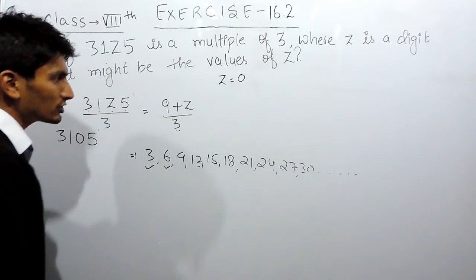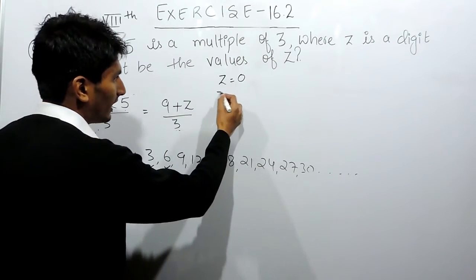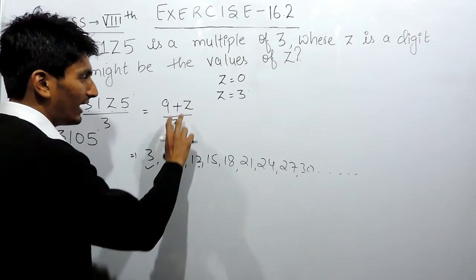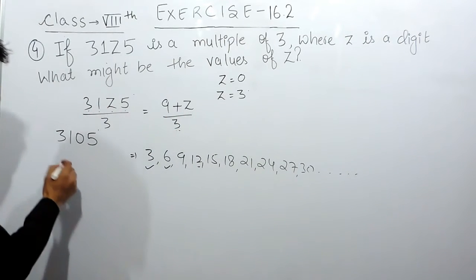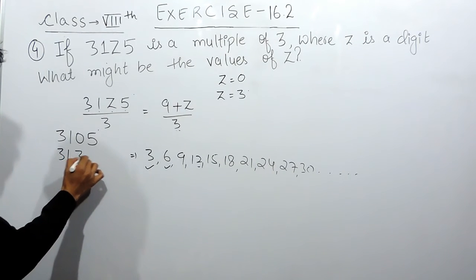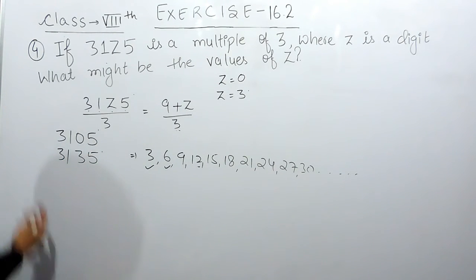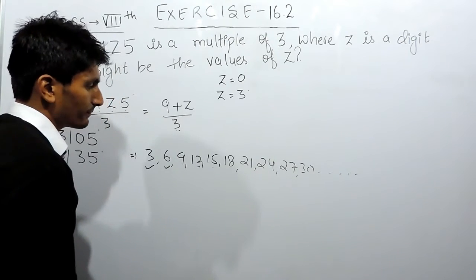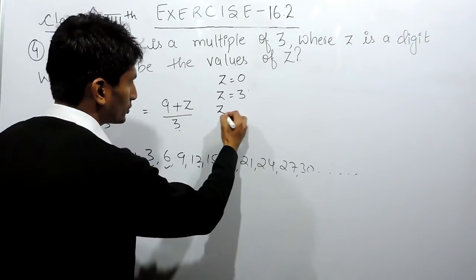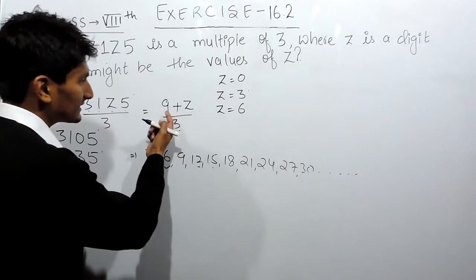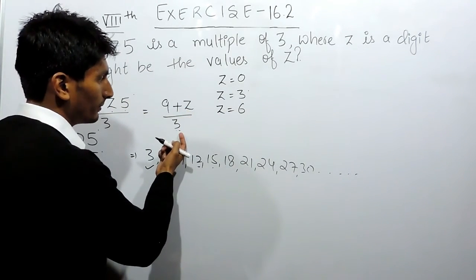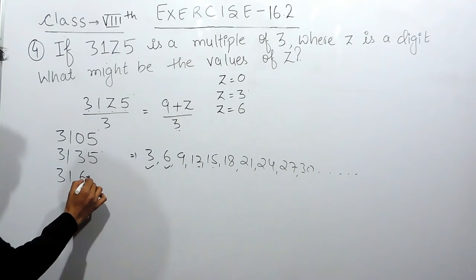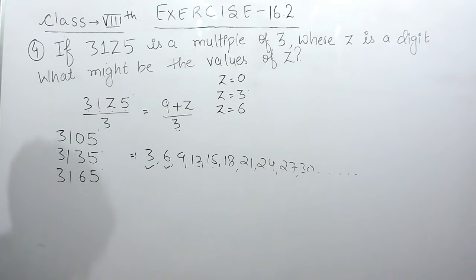Now let's make this sum as 12. To make this sum as 12, I have to substitute the value of z as 3. In that case 9 plus 3 will be 12, which is divisible by 3. So the second value of z is 3. Now let's make this sum as 15. In that case I have to substitute the value of z as 6. Then 9 plus 6 will be 15, which is divisible by 3. So when I substitute the value of z as 6, this third number will also be divisible by 3.